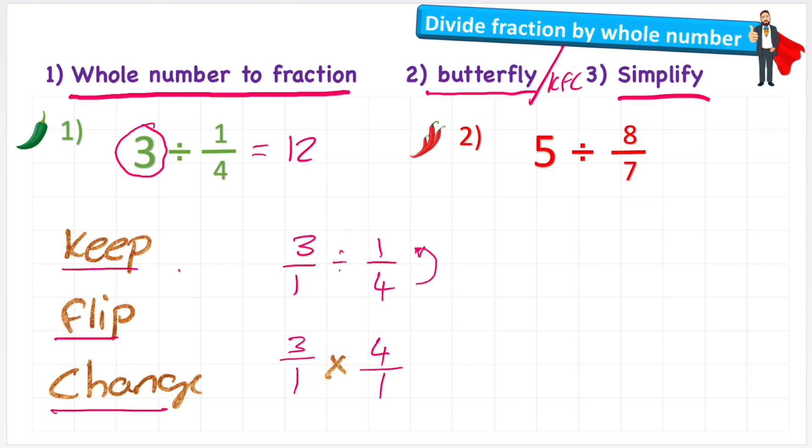So if you think about it, we're actually doing exactly the same as the butterfly technique, but just another way of remembering it. Now I can just multiply across my question. Let's do our numerators first: 3 times 4 equals 12. 1 times 1 equals 1. 12 over 1 is 12. Same answer, but just a different method.